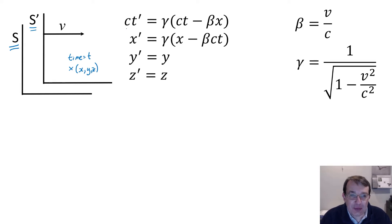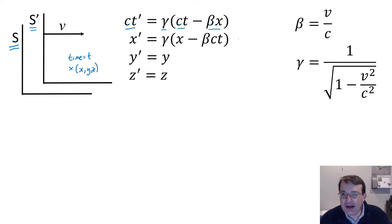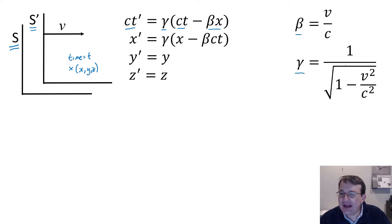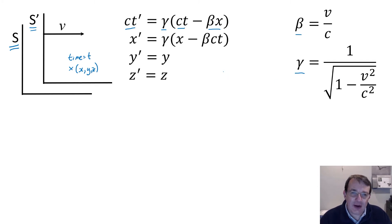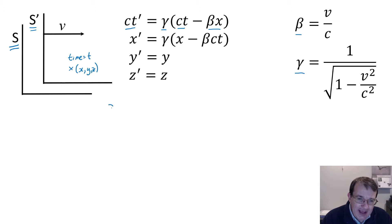...then the rules for transforming the time coordinate and the x, y, and z coordinates into the frame S-prime are: c times t-prime equals gamma times ct minus beta times x, where beta is the relative velocity between the frames divided by the speed of light, and gamma is defined as one over the square root of one minus v-squared over c-squared.